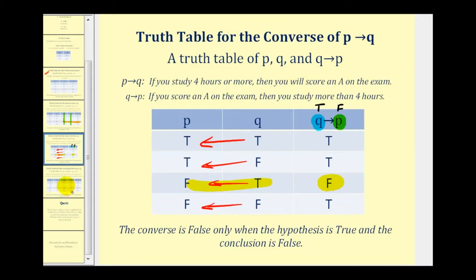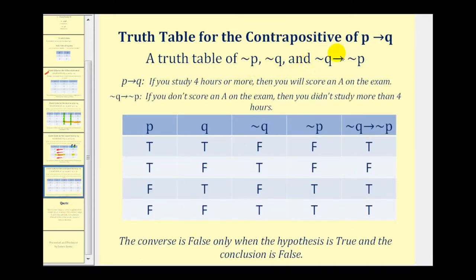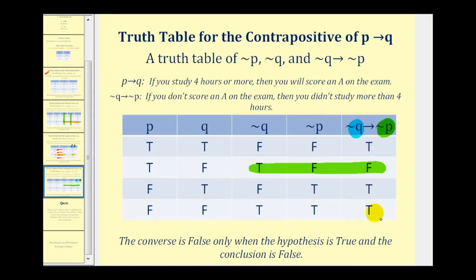Let's try one more. We'll look at the contrapositive of if p then q, which means we'll examine if not q then not p. We'll list p, q, not p, and not q, and then the last column is our conditional. Notice that in this one I switched the order of not q and not p to make the analysis a little easier. Again, I'm looking for when the hypothesis is true and the conclusion is false — true followed by false — and here it is. Everything else in this column is true.